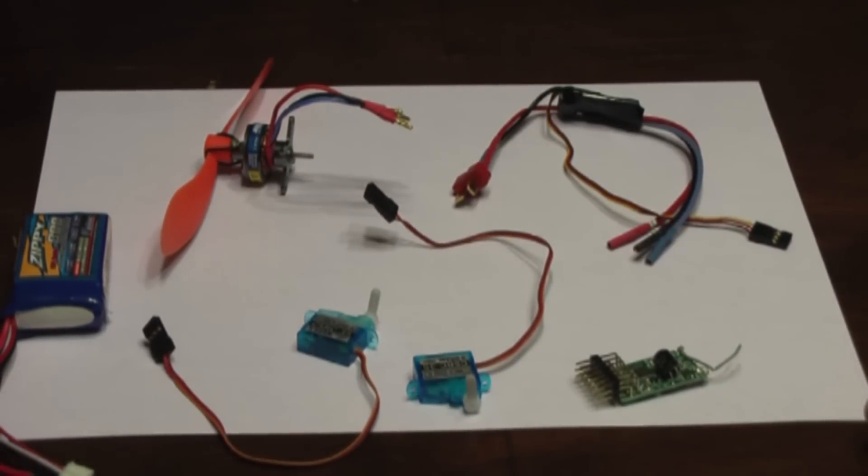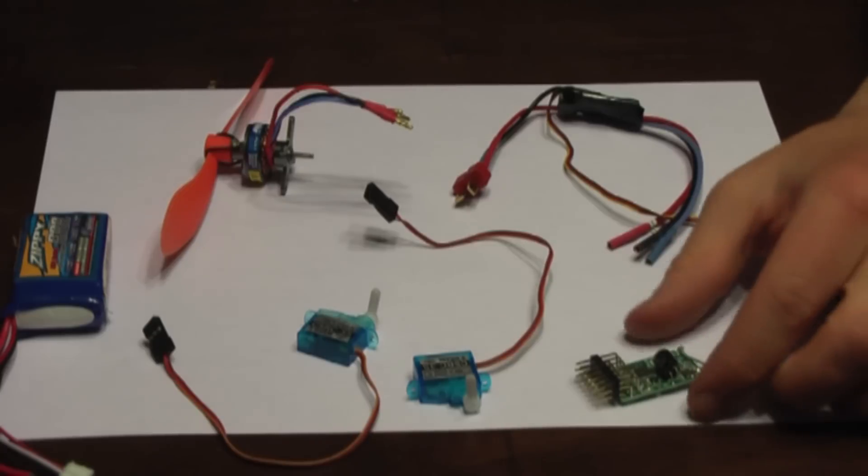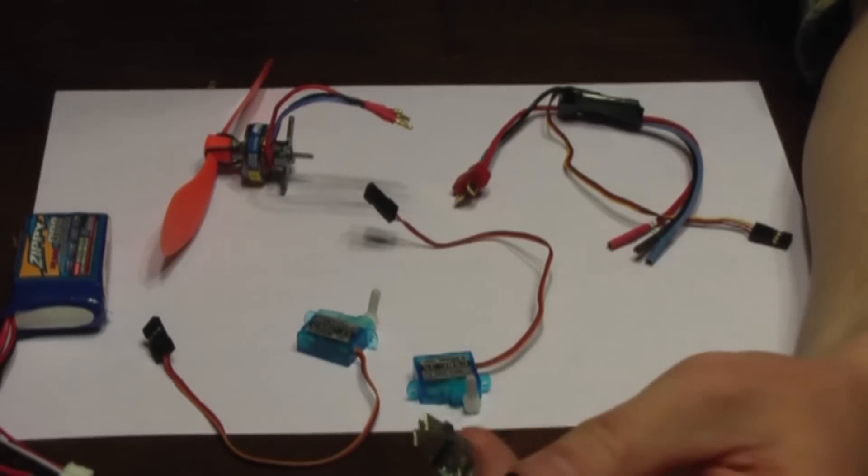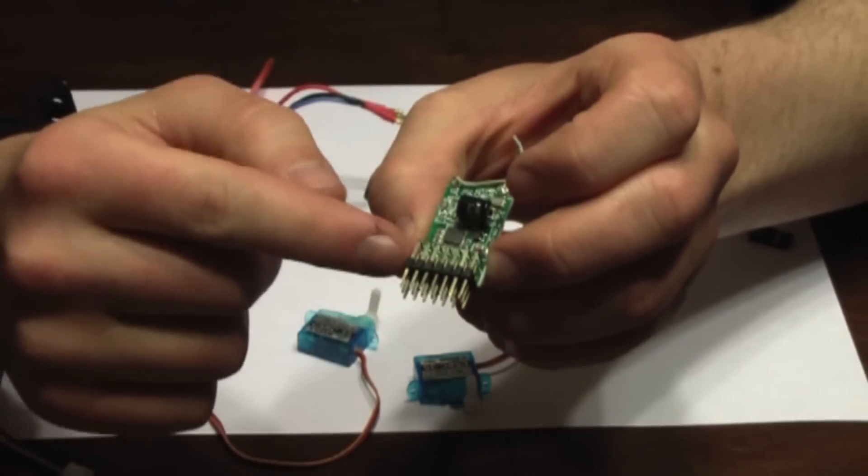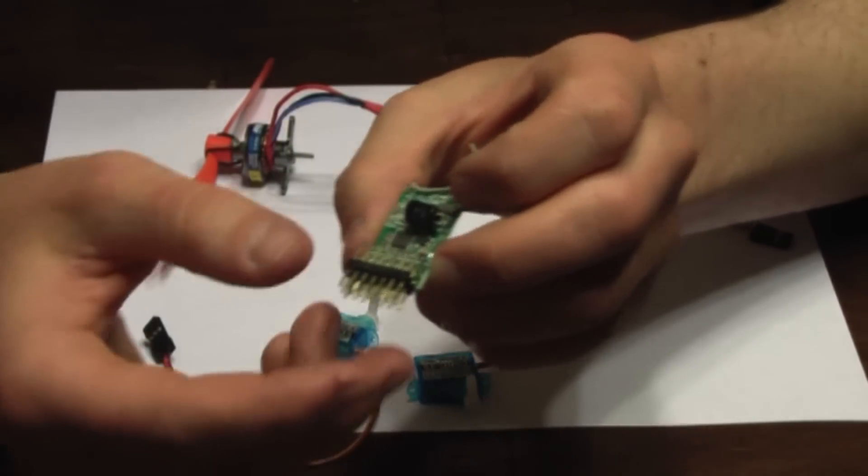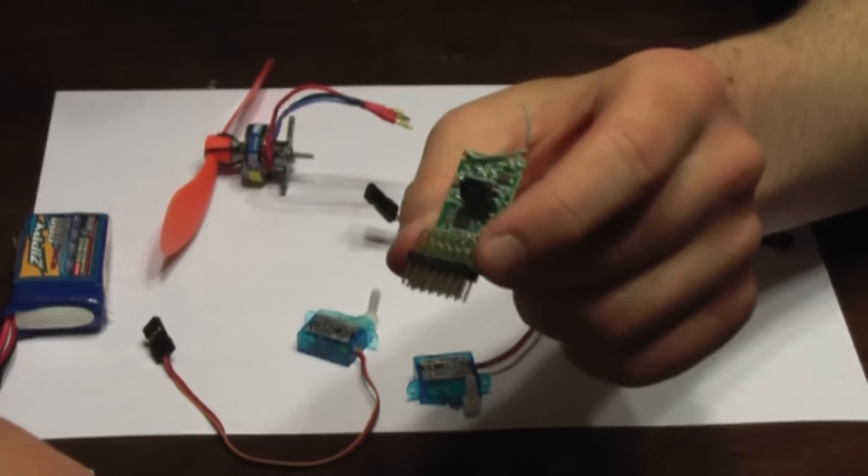So now let's hook everything up just to see how it goes together. So we're going to start with the receiver. Receivers are going to have a bunch of pins on the bottom.